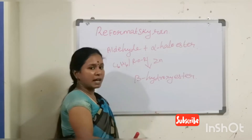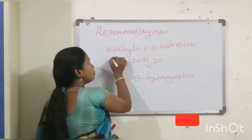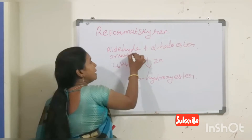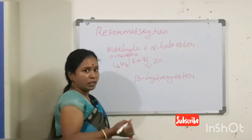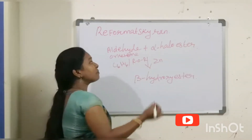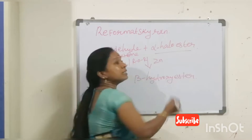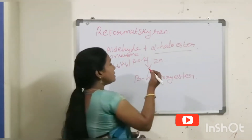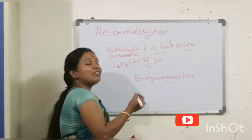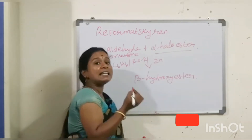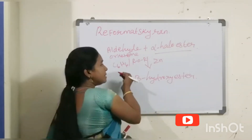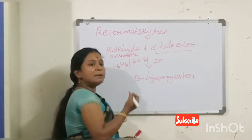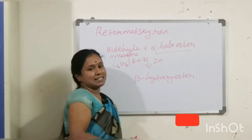So the Reformatsky reaction is a naming reaction of aldehydes or ketones — that is, carbonyl compounds — reacting with alpha-haloester in the presence of zinc metal, using inert solvents like benzene and ether. The product is a beta-hydroxyester.